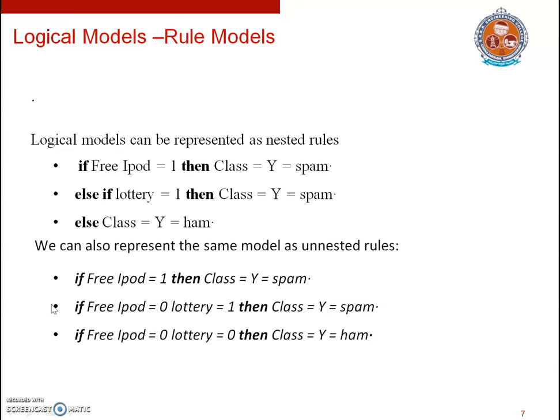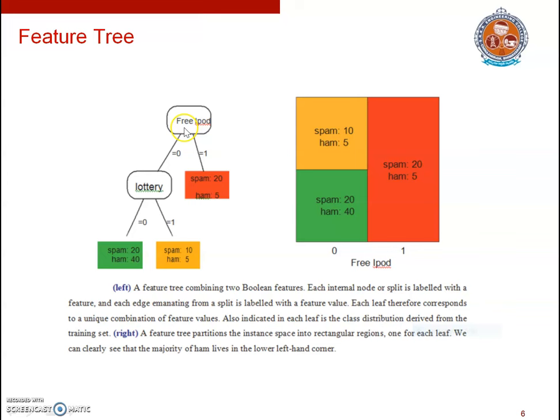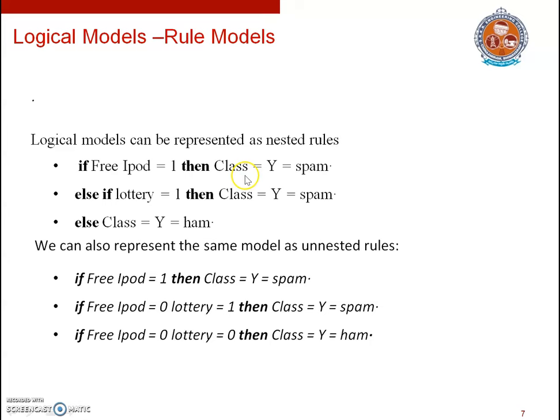Logical models can also be constructed in the form of rule models. We can create rules from the feature tree by generating a rule corresponding to every branch of the tree. For example, looking at the feature tree discussed earlier, if 'free ipod' equals 1, the majority of instances in that leaf belong to class spam. So: if free ipod equals 1, then class is spam.